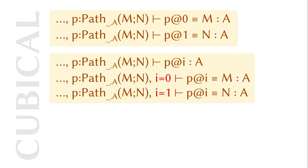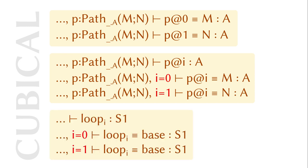Even worse, the term P at i for some dimension variable i is usually stuck. But if there is a constraint i equals to 0 or i equals to 1 in the context, it should reduce to M or N accordingly. Another case is the loop constructor in the circle type. Loop i is usually a value unless there is a constraint i equals to 0 or i equals to 1. It is still under active research to incorporate these rules into the normalization by evaluation framework.